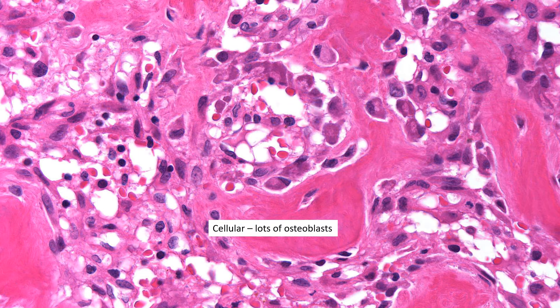This is what a classic osteoid osteoma looks like. You have seams of bone that are typically not lace-like — remember, lace-like suggests an osteosarcoma. Between these bony trabeculae, what you see is a very loose but very vascularized stroma with a lot of vessels, and the bone is lined by osteoblasts. If you look at these osteoblasts carefully, even at extremely high power, there is no atypia whatsoever. If there were one image to burn into your brain with regards to an osteoid osteoma, this would be it.